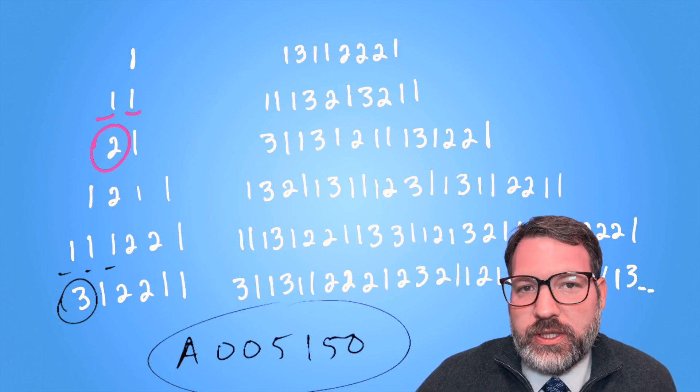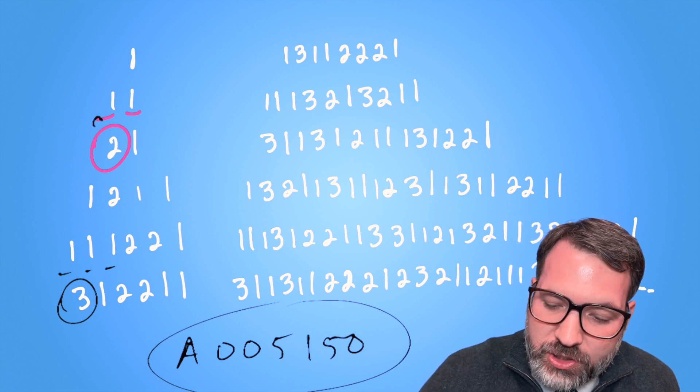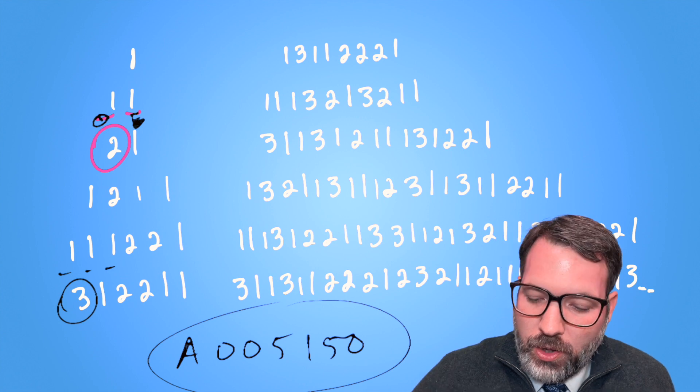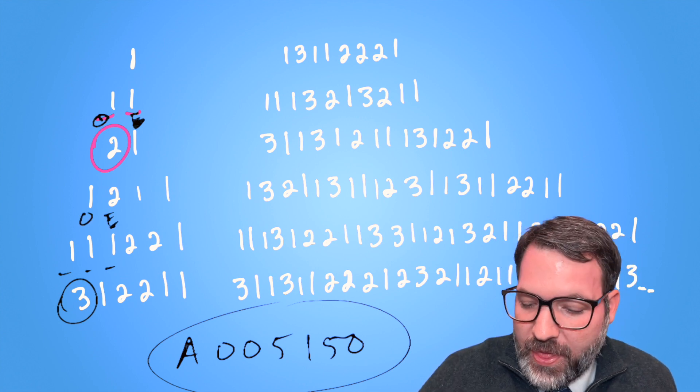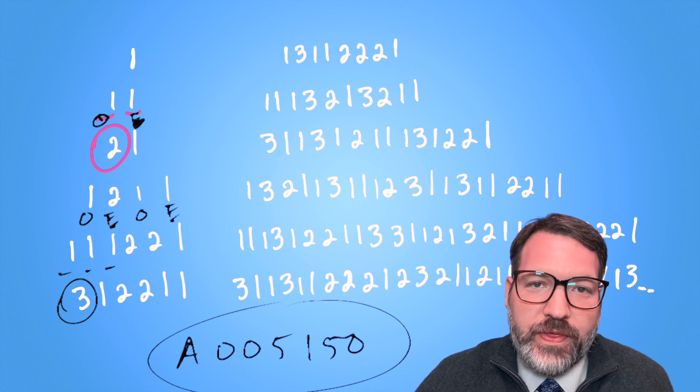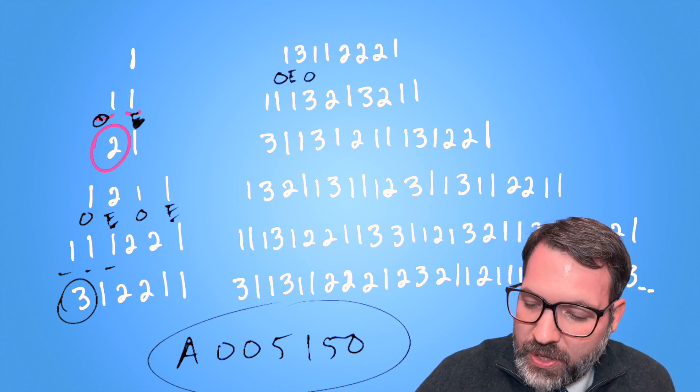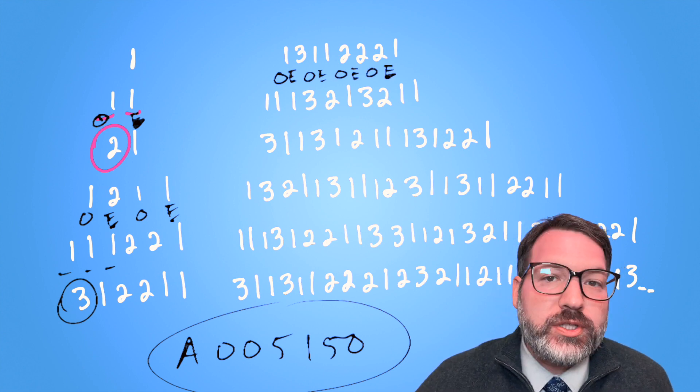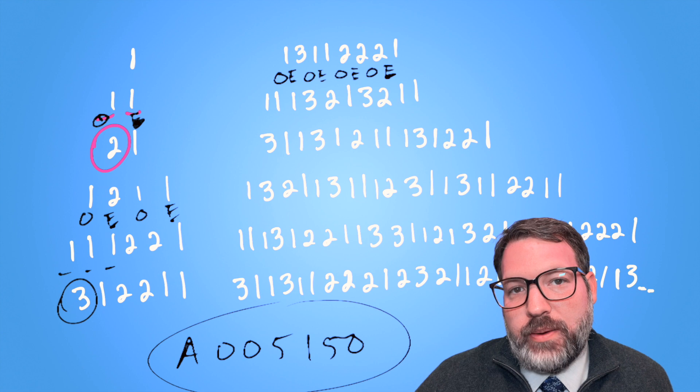After the first term in the sequence, all of these digits come in pairs of O, E. We have a describer and then a described from the 1, 1. We have a describer and then a described, a describer and then a described that generated the 1,211. So every single term in this sequence always comes from some pairs of describer and described digits.